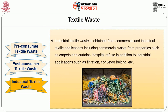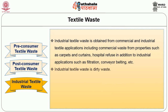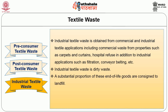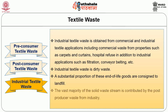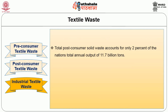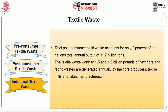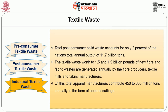Industrial textile waste is obtained from commercial and industrial textile applications, including commercial waste from properties such as carpets and curtains, hospital refuse, and industrial applications such as filtration and conveyor belts. Industrial textile waste is a dirty waste, and a substantial proportion of these end-of-life goods are consigned to landfill. The vast majority of the solid waste stream is contributed by post-producer waste from industry. Total post-consumer solid waste accounts for only 2% of the nation's total annual output of 11.7 billion tons. Between 1.5 and 1.9 billion pounds of new fiber and fabric wastes are generated annually by fiber producers, textile mills and fabric manufacturers, with apparel manufacturers contributing 450 to 600 million tons annually in the form of apparel cuttings.